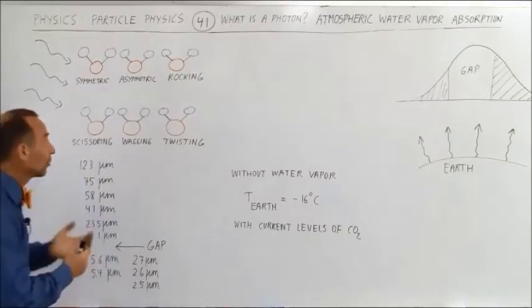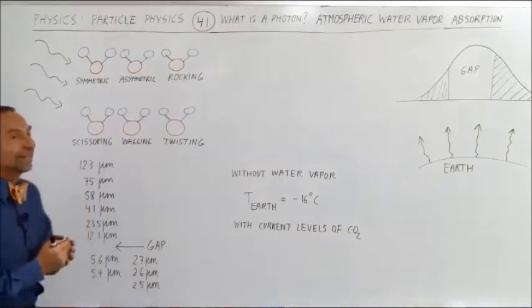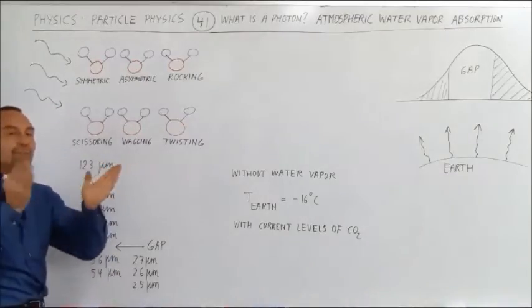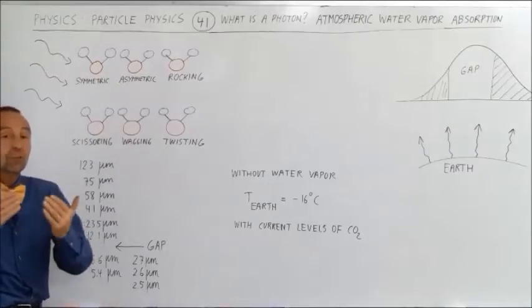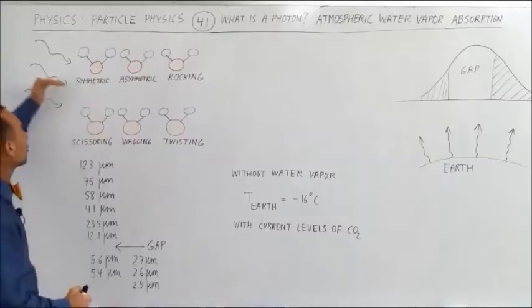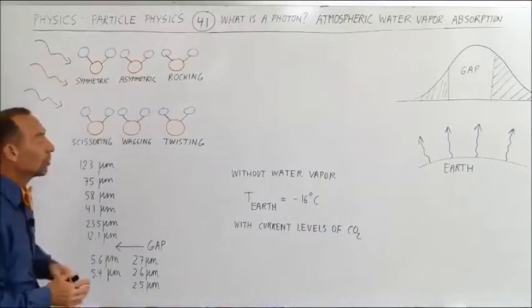And how does that work? Well, it turns out the water molecule is not a linear molecule, it's a bent molecule. And because of that, because of the shape of the water molecule, it has so many different vibrational modes, each one of them that is able to absorb photons coming back from the Earth.